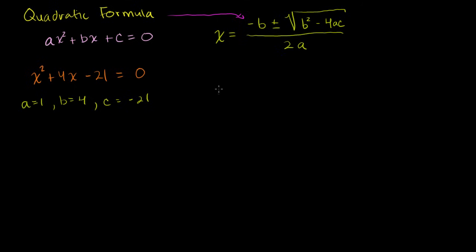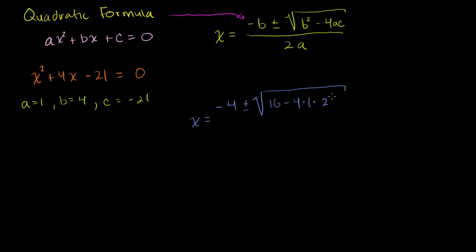Let's just plug it into the formula. x is going to be equal to negative b — negative b is negative 4 — plus or minus the square root of b squared, which is 16 (4 squared is 16), minus 4 times a, which is 1, times c, which is negative 21. All of that over 2 times a, which is 1, so all of that over 2.